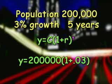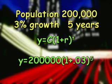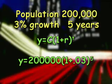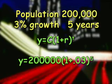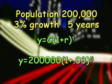And t is the time, and the time is five years. So, y equals 200,000 times the quantity 1 plus three hundredths raised to the fifth power. Using the order of operations, 1 plus three hundredths is 1 and three hundredths.